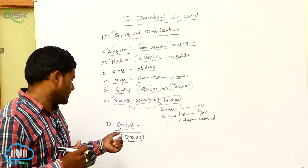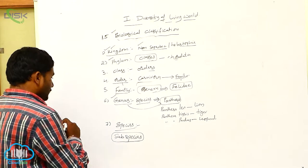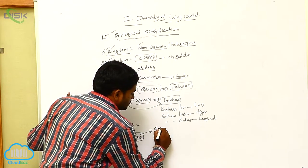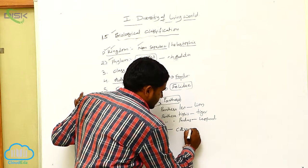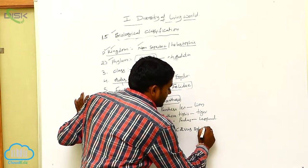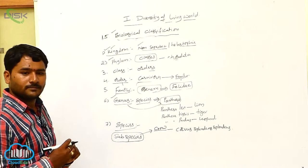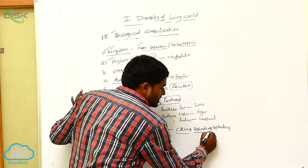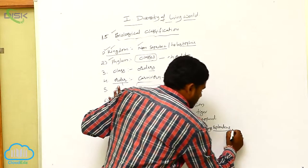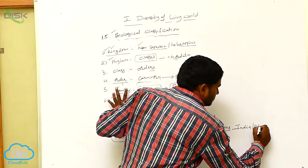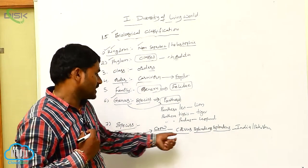Let us see some subspecies examples. If you take subspecies of crow, there are three types. Corvus splendens splendens is the subspecies of crow living in India and Pakistan.